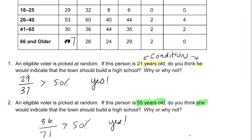I think they would vote for it. Your job in many of these problems is to identify what the conditions are, because once you know the conditions, you can find the probabilities. That changes your total population that you're looking at — it depends on what those conditions are. I hope this helped.